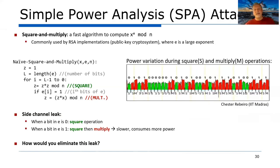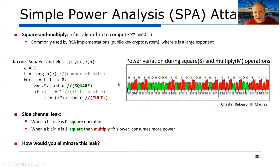Here's a power attack on the square-and-multiply algorithm. Remember, with a zero bit we just do a square, and with a one bit we do a multiply. By looking at power variations as the algorithm runs, we see little spikes when that additional multiply occurs. We can read the key bits directly: zero, one, zero, one, zero, zero, zero — getting a lot of information out by just observing that additional power drop from the multiplier.